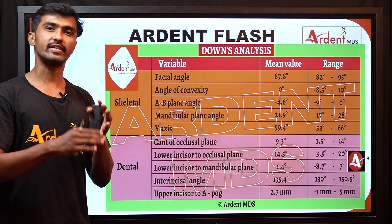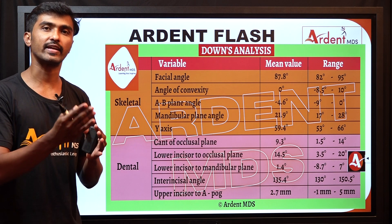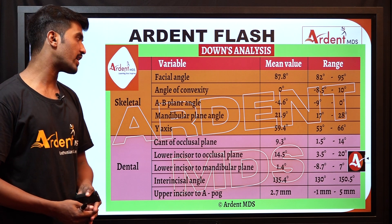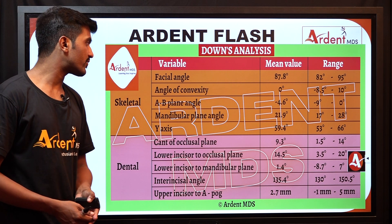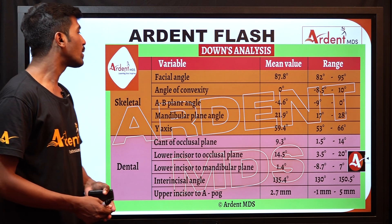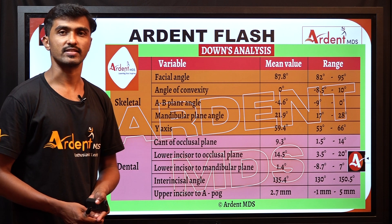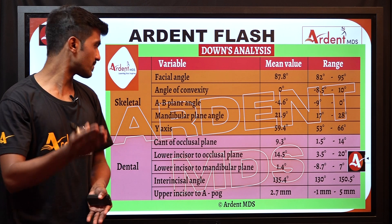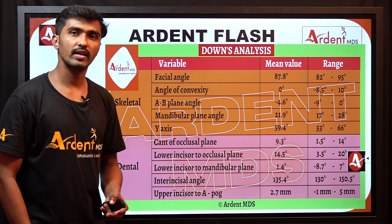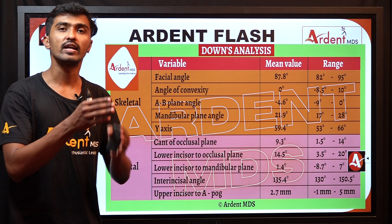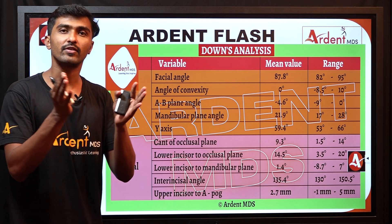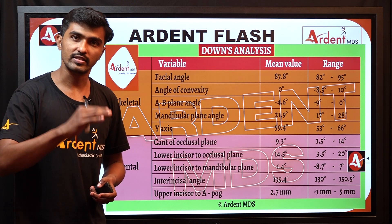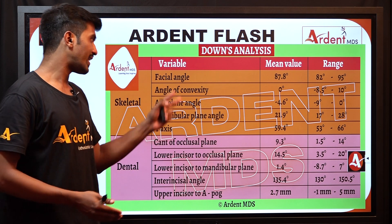In skeletal we have five categories and in dental we have five categories. The skeletal parameters are: facial angle, angle of convexity, AB plane angle, mandibular plane angle, and Y-axis. The Y-axis is also called the growth axis. Both the mandibular plane angle and Y-angle tell about the type of growth pattern — whether the patient has a vertical or horizontal growth pattern.